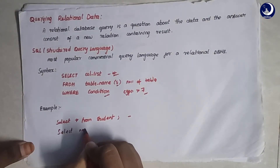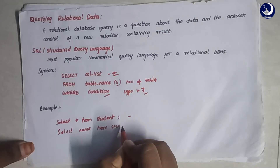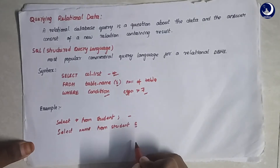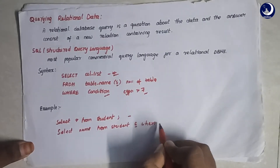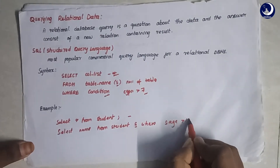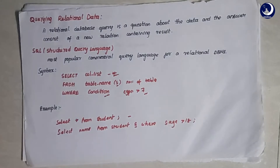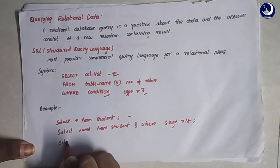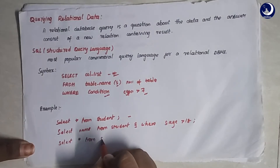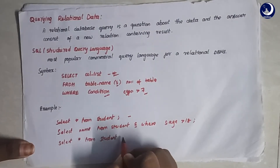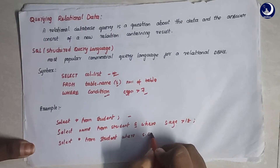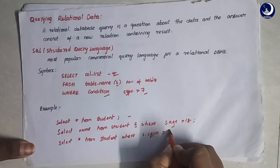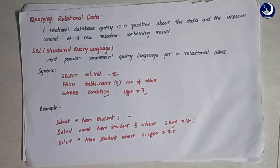First example: SELECT * FROM student — this simply gives the entire student table. Next example: SELECT name FROM student S, where S is an alias for student, WHERE S.age is greater than 18 — this returns the names of students whose age is greater than 18. Next: SELECT * FROM student WHERE S.CGPA is greater than 7.5 — this gives the details of students who got distinction.